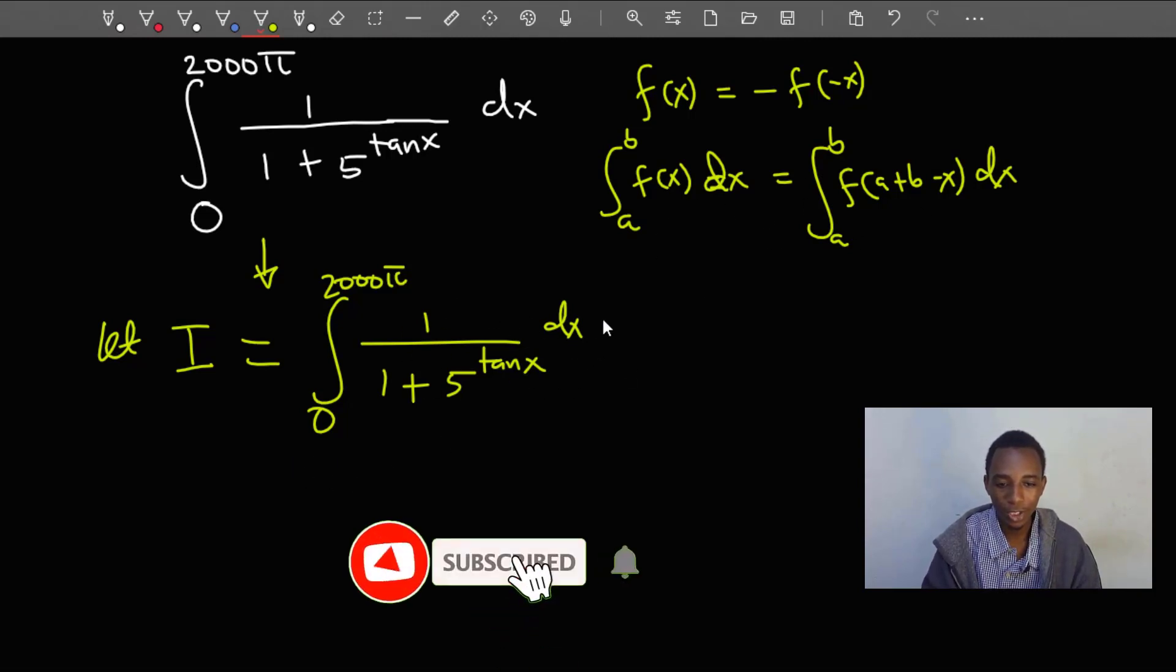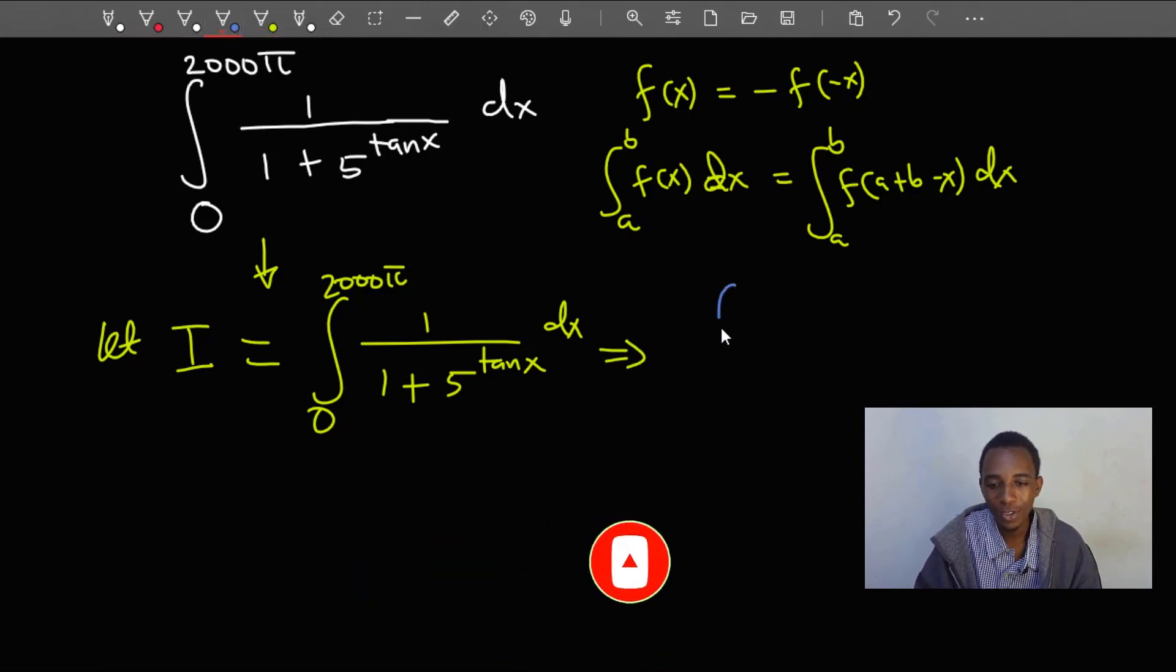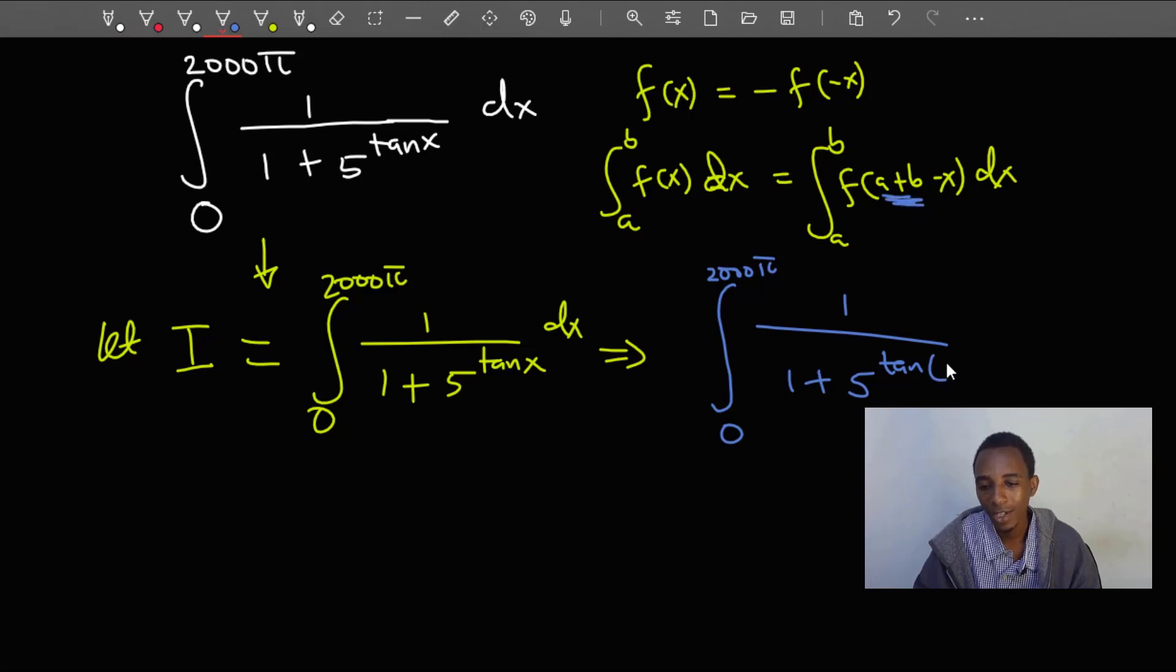This should be the same as the integral from 0 to 2000π of 1 divided by 1 plus 5 to the power tan. Now instead of having x, I'll have 0 plus 2000π, and that's simply 2000π minus x, just like we have part here. This is with respect to x.